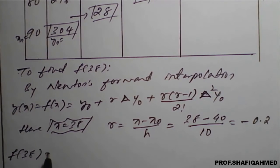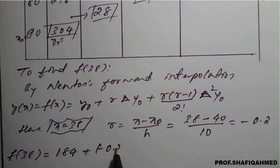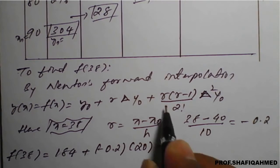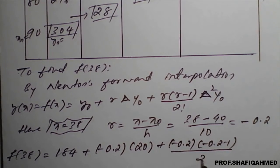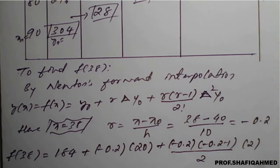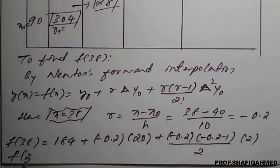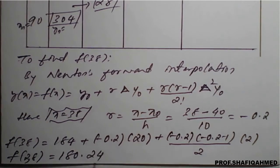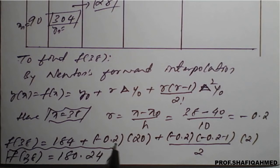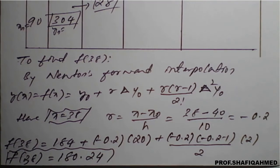Substituting: f(38) = 184 + (−0.2)(20) + [(−0.2)(−0.2 − 1)/2](2). If you type all these values in the calculator, the value of f(38) comes out as 180.24. Adding 184 plus all the other terms in the calculator confirms it becomes 180.24.